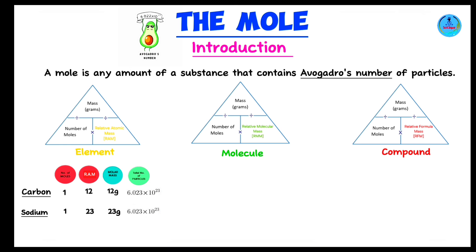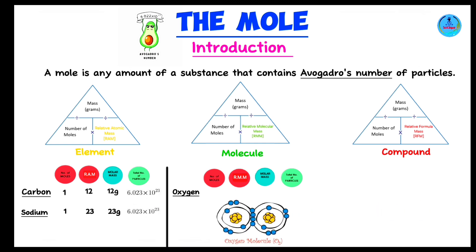Moving on to relative molecular mass — this applies to molecules. A great example is oxygen. Oxygen is an element, but it exists as a diatomic molecule: one oxygen atom covalently bonded to another, forming O₂. The relative molecular mass of an oxygen molecule is 32 — that's 16 multiplied by 2, since there are two oxygen atoms each with a relative atomic mass of 16. The molar mass is therefore 32 grams, and one mole of oxygen molecules contains 6.023 × 10²³ particles.